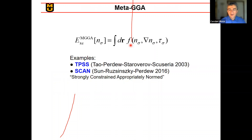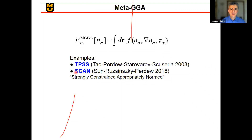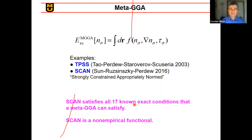John Perdew has been the pioneer for all of this. There is an early meta-GGA called TPSS from 2003. There's a more recent meta-GGA called SCAN — Strongly Constrained and Appropriately Normed — which satisfies all 17 known exact conditions that a meta-GGA can satisfy. It is a non-empirical functional, which from a physicist's point of view is quite satisfying, and it performs quite well.